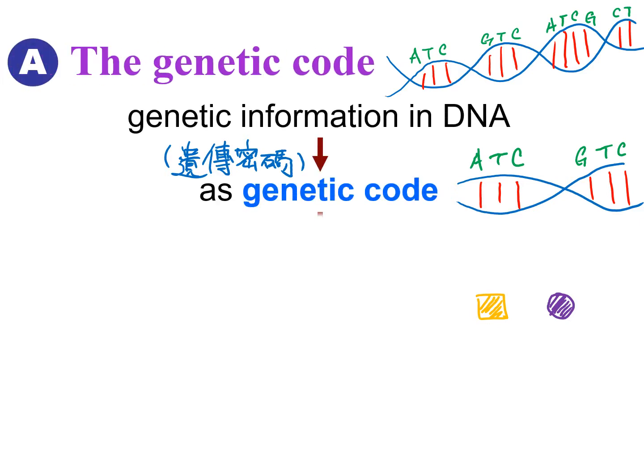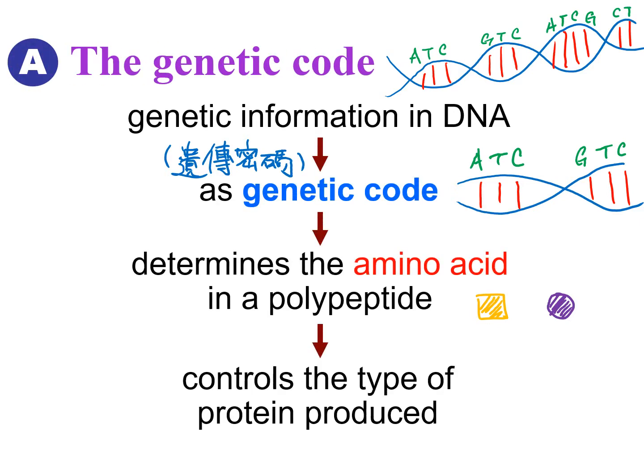To understand molecular genetics, we have to take a look at the DNA first. Our DNA is a double helix, shown on the top right hand corner. It carries the genetic information. Inside this DNA, it has a nitrogenous base sequence, such as ATC, GTC, ATC, GCT, shown on my drawing. And this sequence of nitrogenous bases, when they are in a group of three, we call this a genetic code.